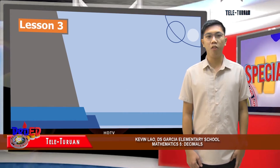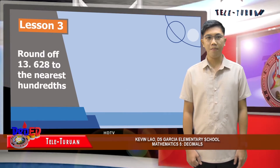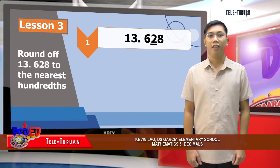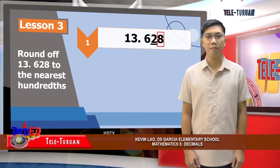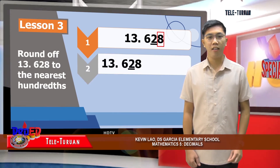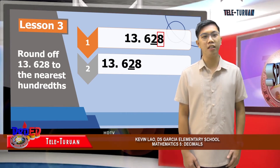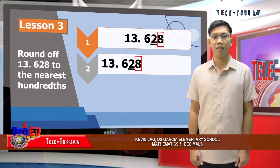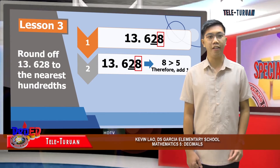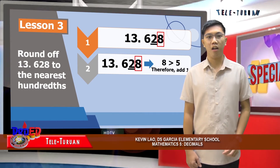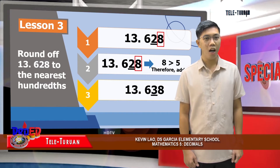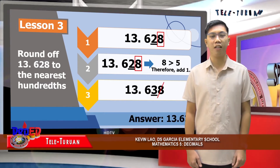Our last topic will be on rounding of decimals. To round a decimal number, we follow certain steps. First, determine the rounding place and the digit to the right of the rounding place. Second, the digit in the rounding place is the one that will either be rounded up or rounded down, depending on the digit on the right. Remember: if the digit to the right of the rounding place is five or greater, add one to the rounding place; while less than five means retaining the digit in the rounding place. Last, do not forget to drop all the digits after the rounding place.